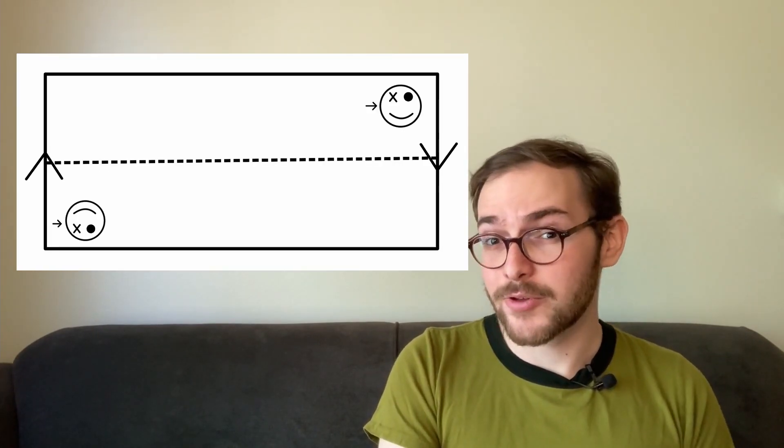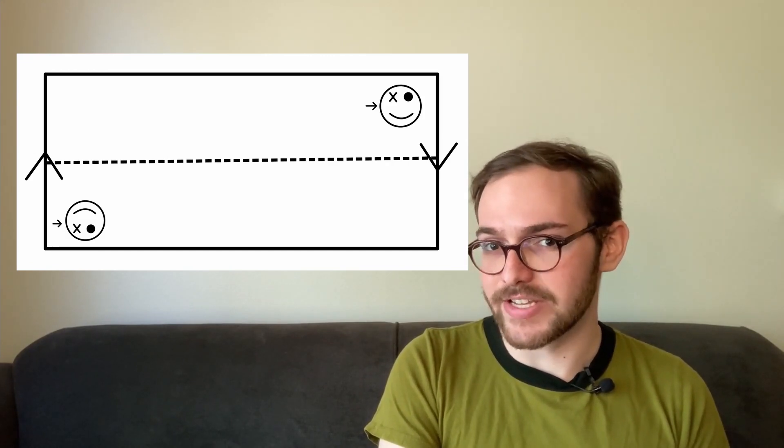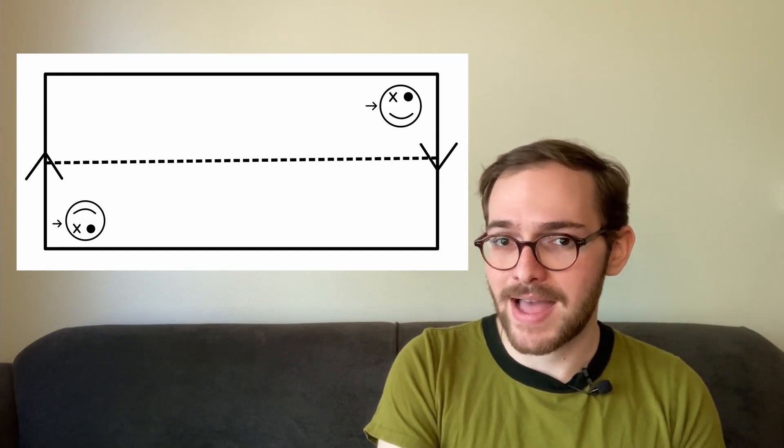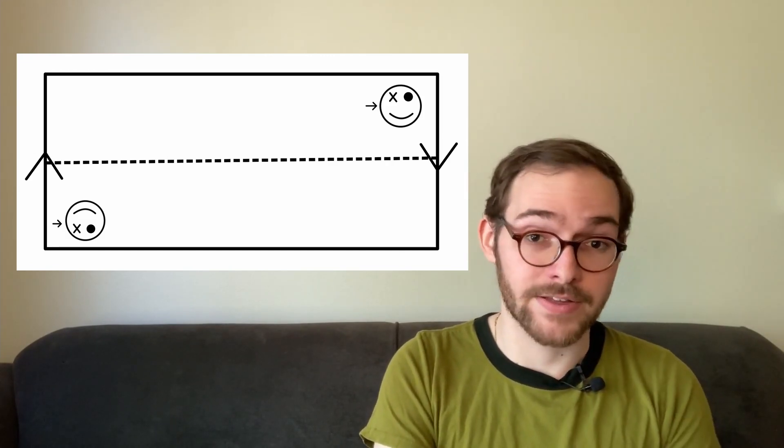If I cut through the middle, the entire strip is still connected because you can get from the top half to the bottom half by passing through the teleporters.